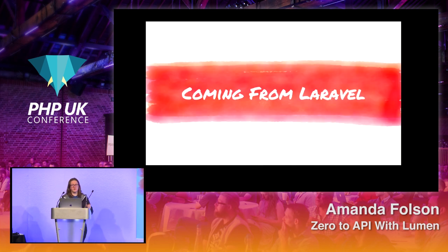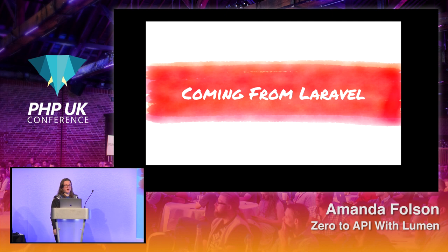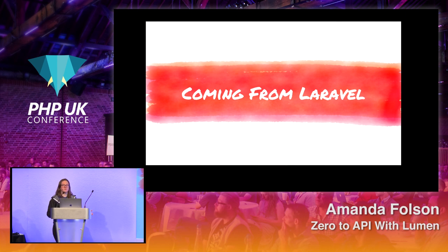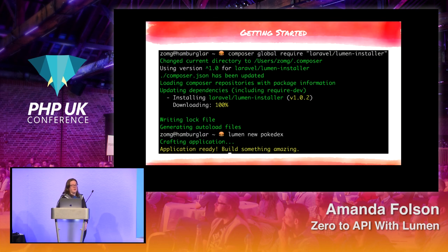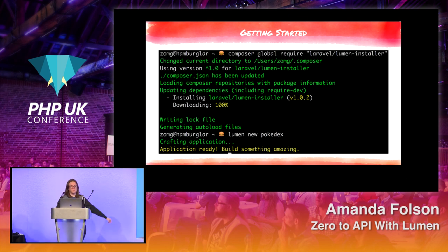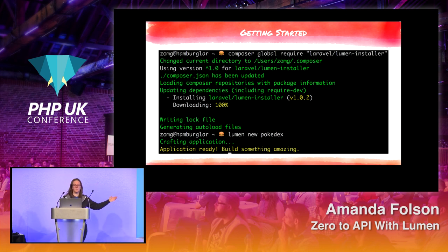If you're coming from Laravel, Lumen still has many of the bells and whistles you're used to. You can still use Homestead — a Vagrant environment pre-configured for Laravel sites — to get up and running very quickly. The installation process should look pretty familiar, whether you use the Lumen installer or composer create-project. Both work just as they would in Laravel.